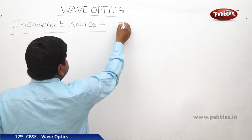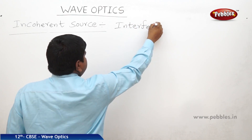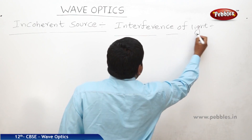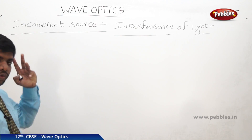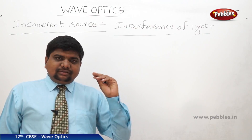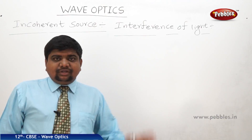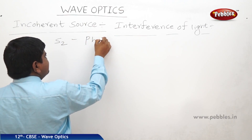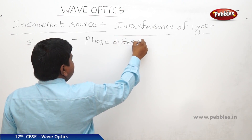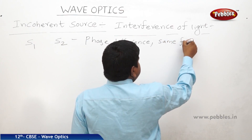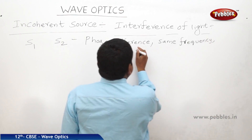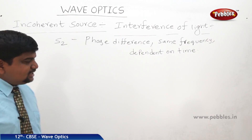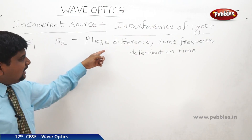The next concept is interference of light. What is the meaning of interference of light? Take two light sources S1 and S2 having some phase difference and the same frequency. These two sources maintain that phase difference and same frequency with respect to time while they are travelling in the same direction.